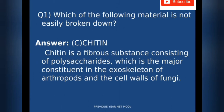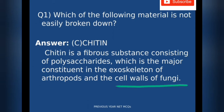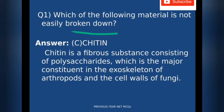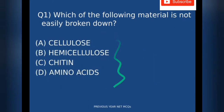The correct answer is option C, chitin. Chitin is a fibrous substance consisting of polysaccharides, which is the major constituent in the exoskeleton of arthropods and the cell walls of fungi. These structures are not easily broken down, hence chitin is the strongest among all four options.